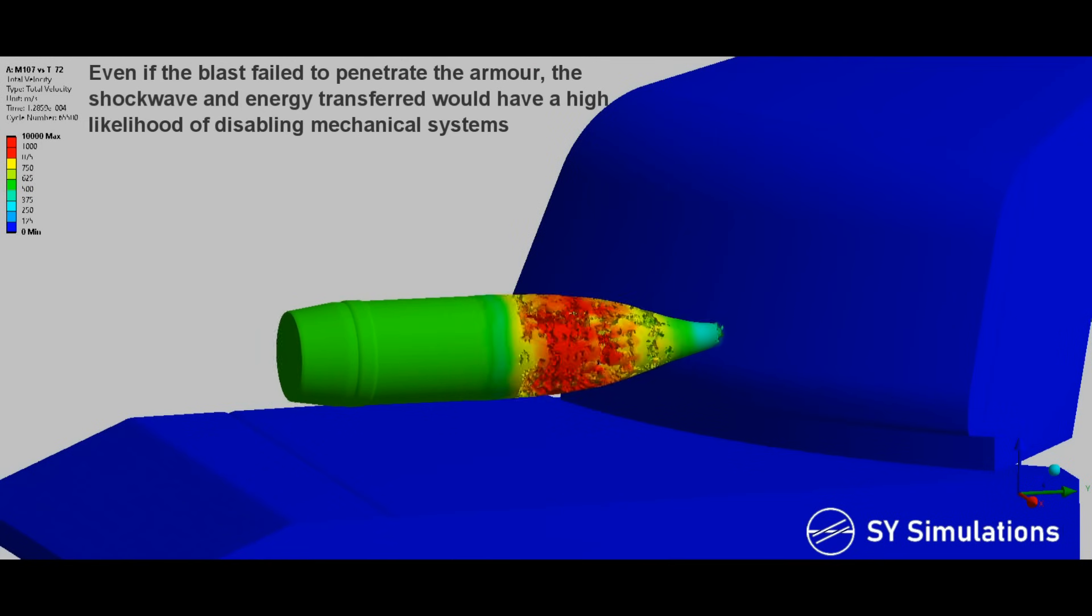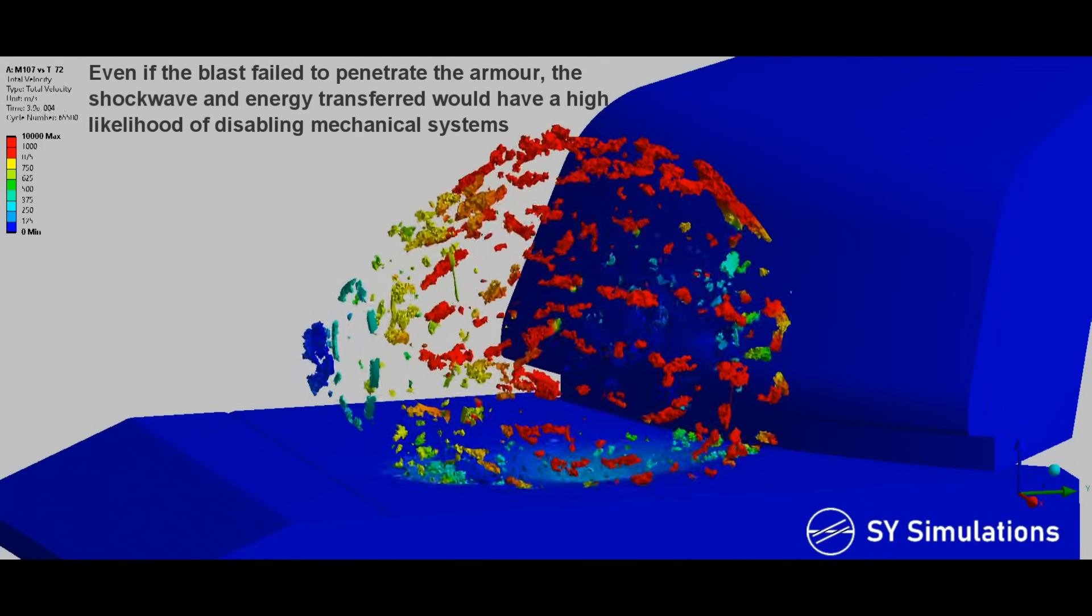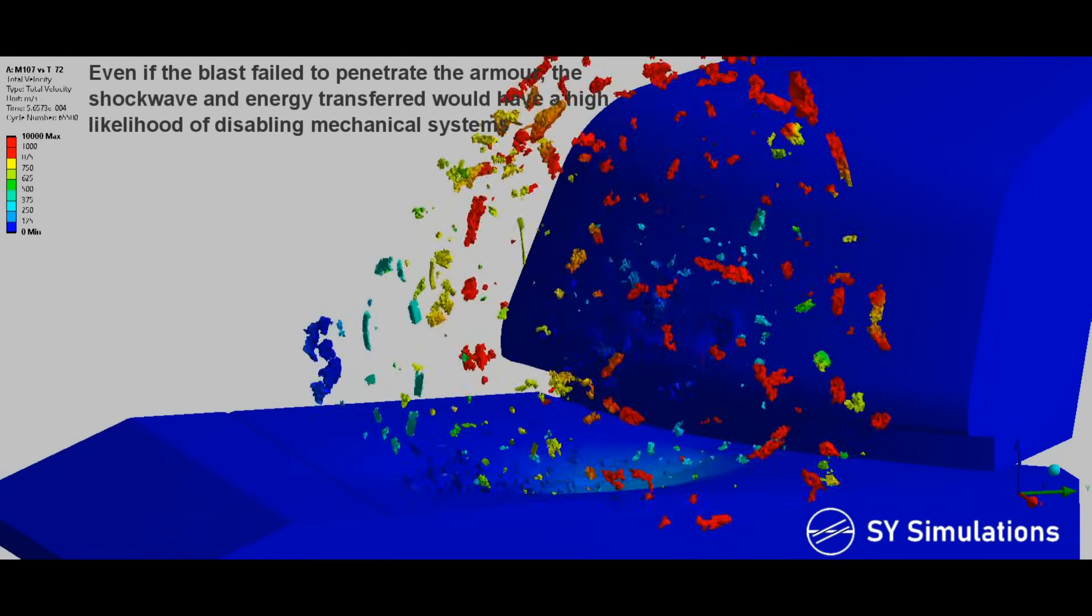Even if the blast failed to penetrate the armor, the shockwave and energy transferred would have a high likelihood of disabling mechanical systems.